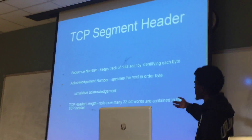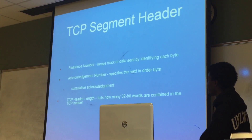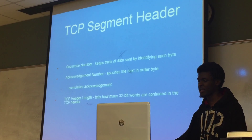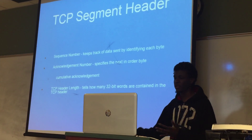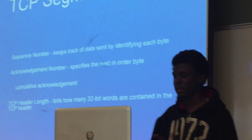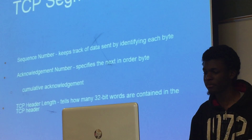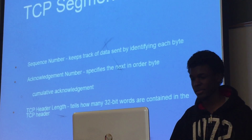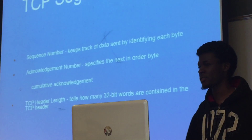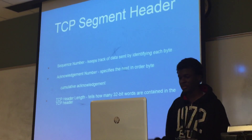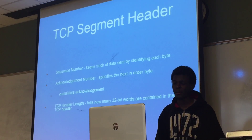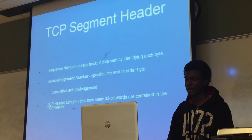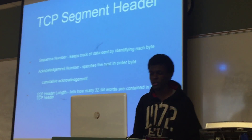The segments have the sequence number which identifies the order of the bytes. The importance of this is so that each byte is kept in order so that when it's reassembled it stays in order. The acknowledgement number specifies the byte that's expected to be received next. This implicitly implies that every byte previous to the acknowledgement number has been received. This is called cumulative acknowledgement.